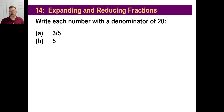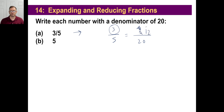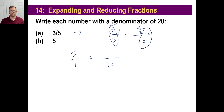Write each number with a denominator of 20. Three-fifths is equal to how many twentieths? You'll have to cut each of those five pieces into fourths, so three times four is 12. So 12 out of 20 is the same thing as three out of five. How about a whole number like five? Any number on Earth is a fraction because you can always put it over one. So one times 20 is 20, and five times 20 is 100. And 100 over 20 — remember, this is division — that's the same as five divided by one.